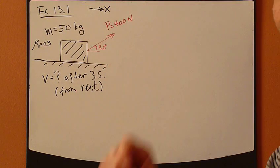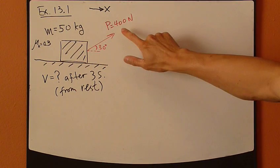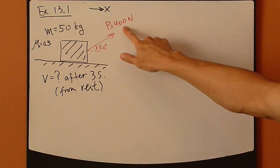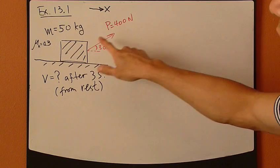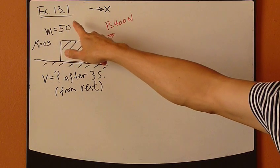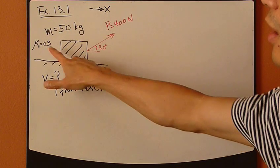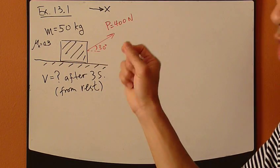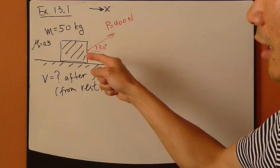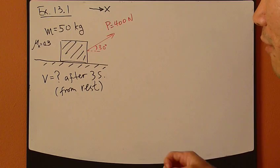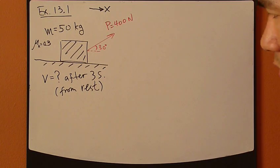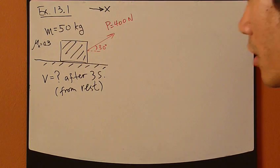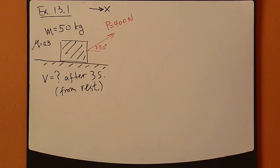First of all, realize that this is a kinetics problem. You have forces acting on this particle right here. You have this pulling force P. You have a mass given, so you have a weight. And you have a kinetic friction coefficient, which means that friction force will affect the motion. So all these forces are external forces that affect your motion.